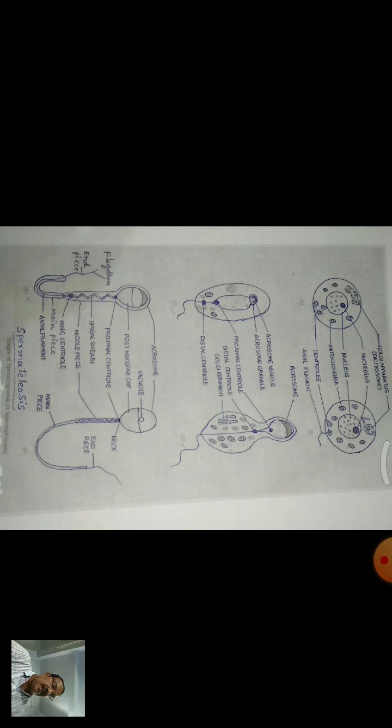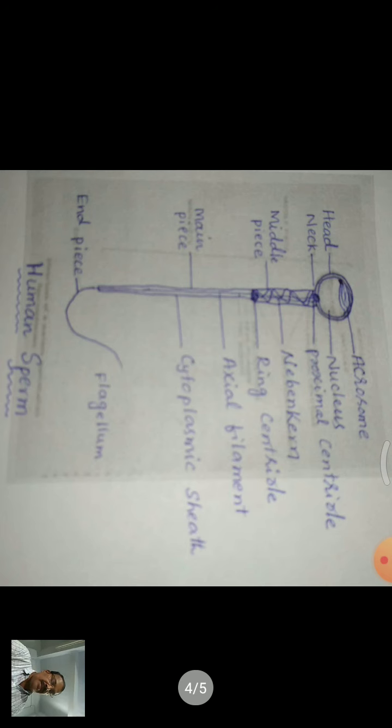At the end of this process, the spermatid is developed into a spermatozoon. The structure of human sperm: sperm is a slender, motile, active male gamete produced by testes. The sperm consists of mainly two regions: head and tail. The head is oval shaped.